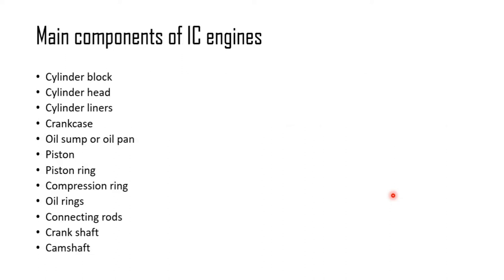Now, main components of IC engines. These are the main components — not all components, but the main ones: cylinder block, cylinder head, cylinder liner, crankcase, oil sump or oil pan, piston, piston ring, compression ring, oil ring, connecting rods, crankshaft, and camshaft. Let us understand each briefly, one by one.